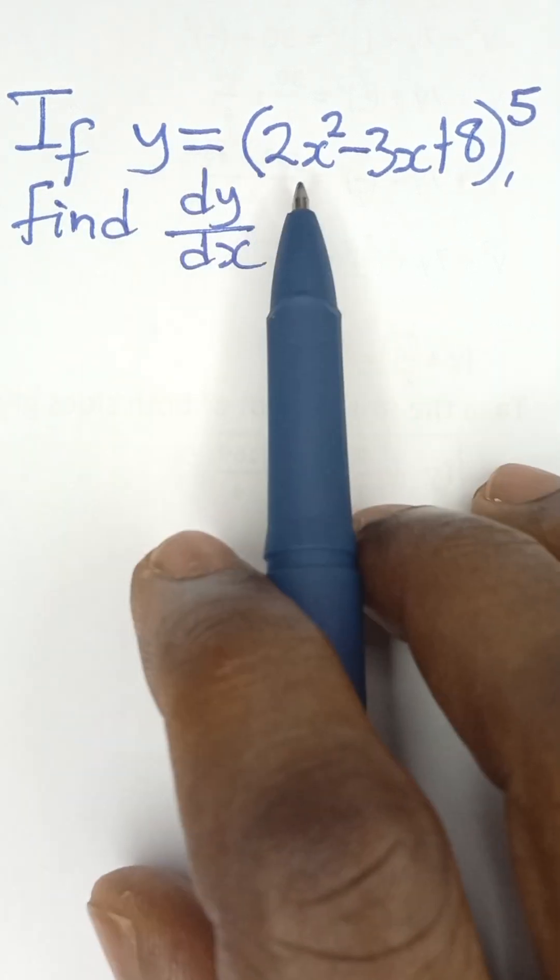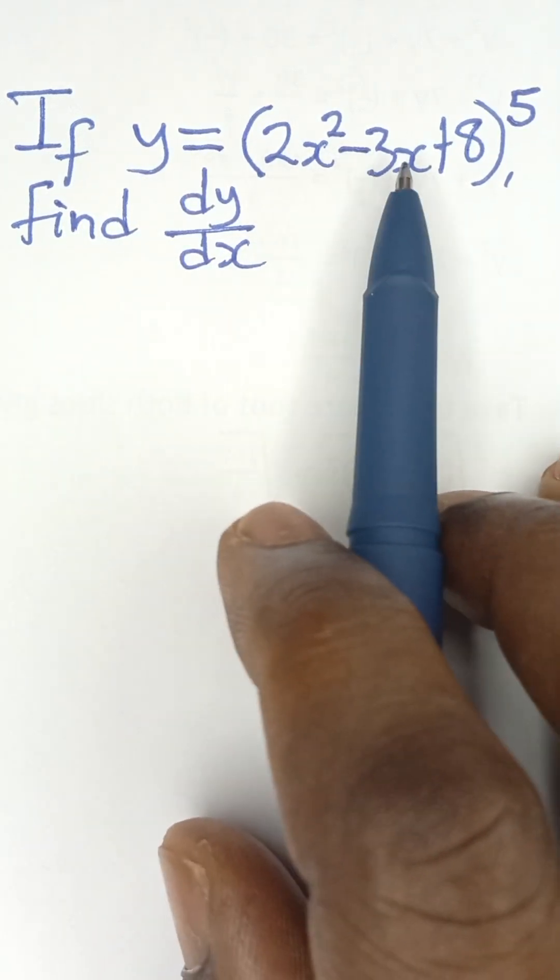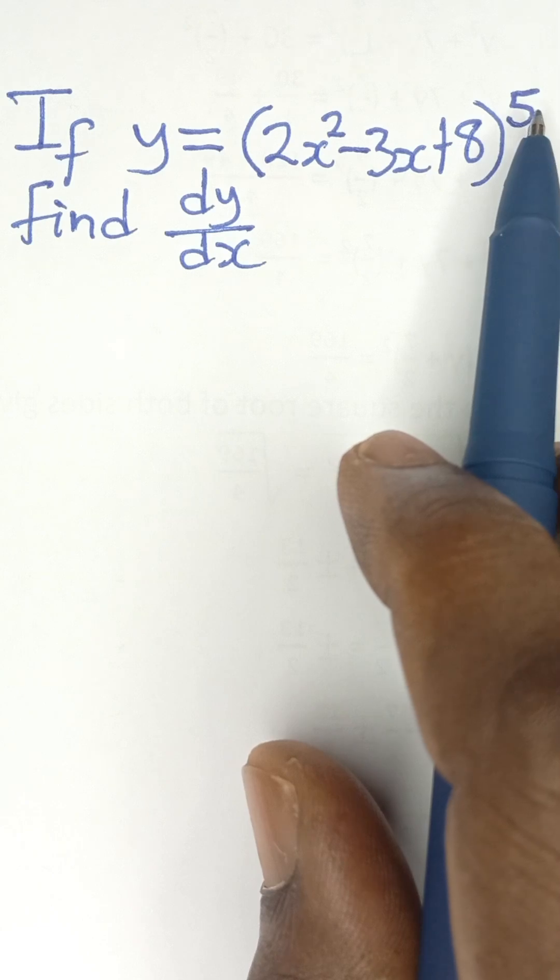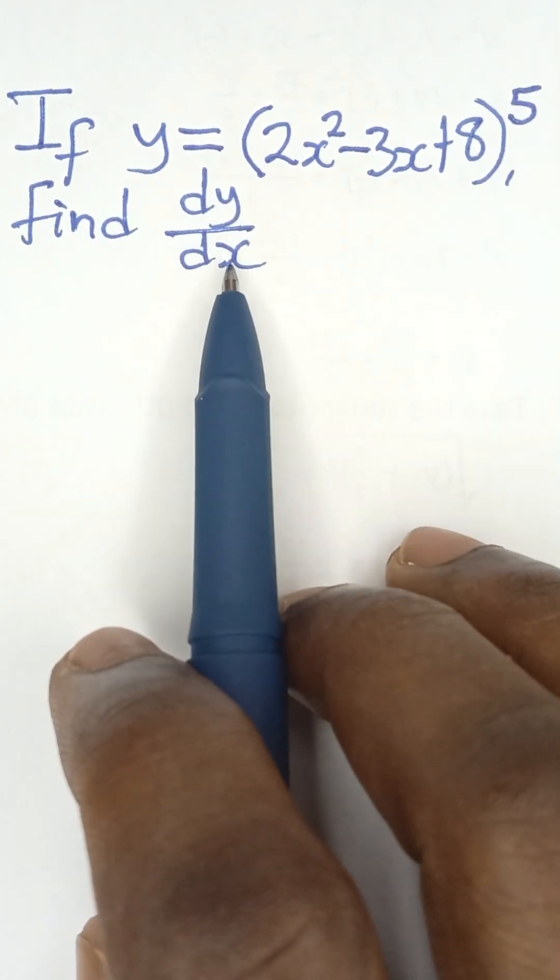So, if y is equal to 2x squared minus 3x plus 8 raised to the power of 5, find dy/dx.